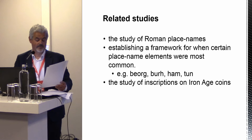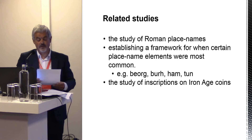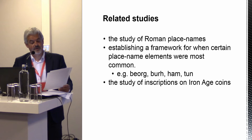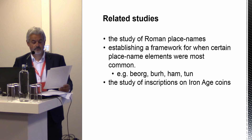This is part of a wider study of languages in prehistoric Britain, which also involved the study of Roman place names, establishing a framework for when certain place name elements were common — like 'beorg', commonly used for early Bronze Age burial mounds, 'burh', very commonly used for Iron Age hillforts, and 'ham' and 'tun', which appear to be later terms. My research strongly supports the possibility that a Germanic language was spoken in Eastern Britain as early as the Early Bronze Age, from 2400 BC, and it may well be earlier still.